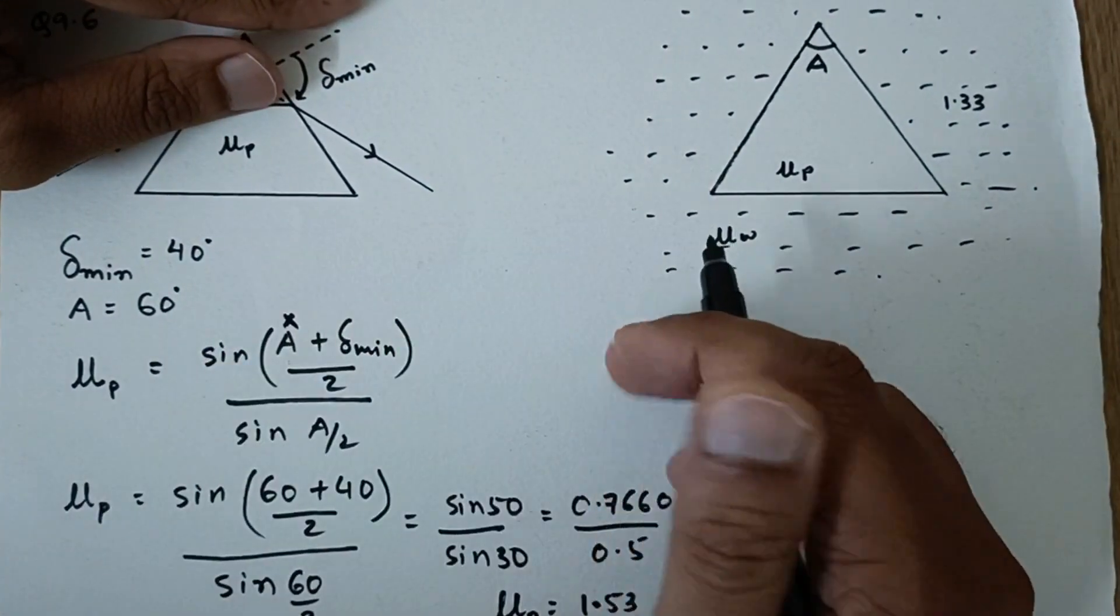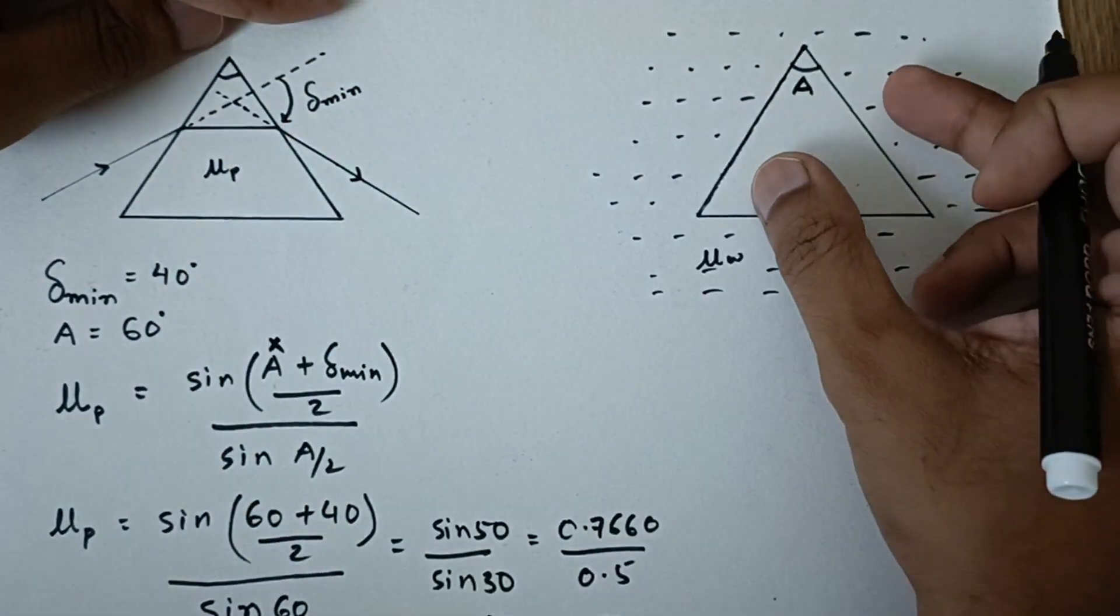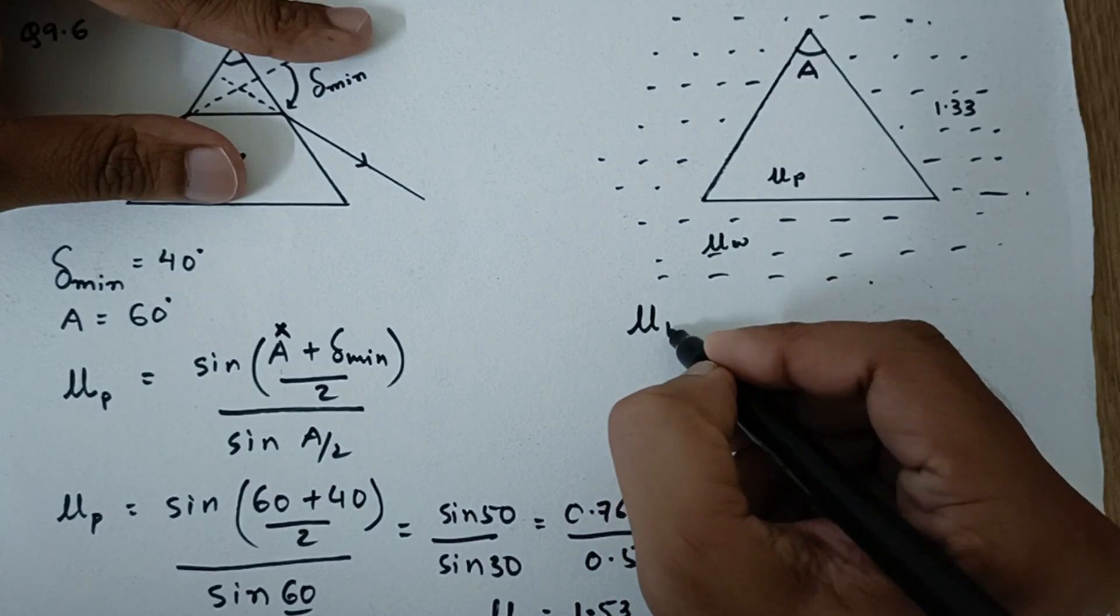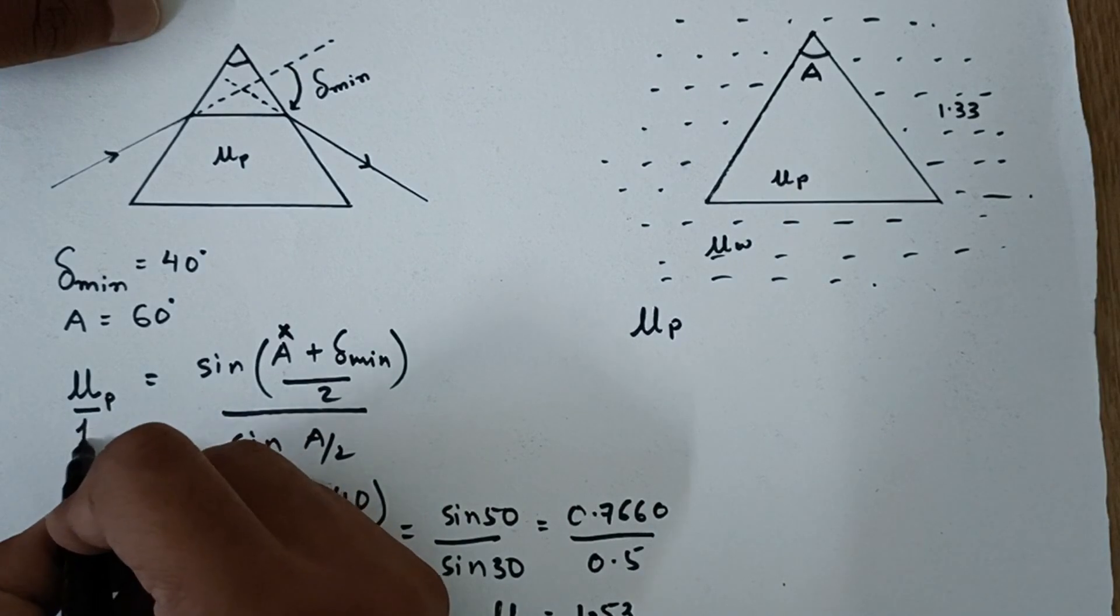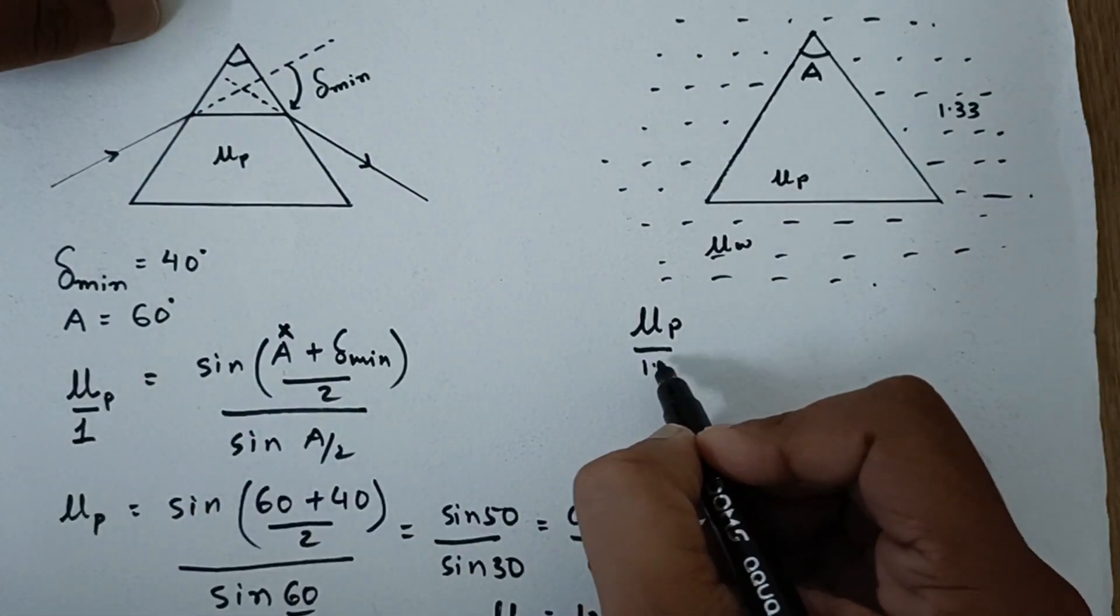Okay, so from this we can say that if this prism which was in air, now if it is kept in water, it will be refractive index of the prism with respect to water. This was with respect to air. So here with respect to air and the refractive index of air is 1. But here it is with respect to water.